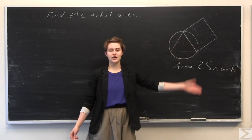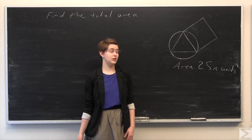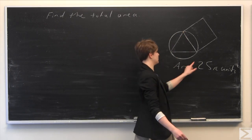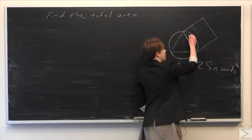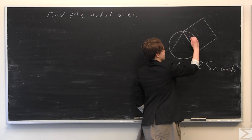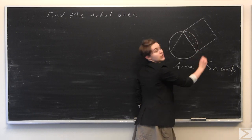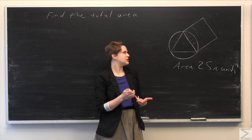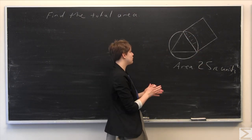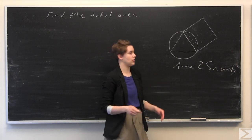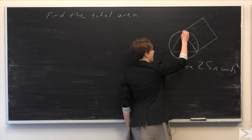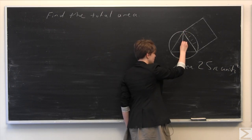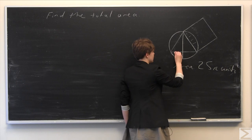We're given only the area of the circle, and we need to find the total area enclosed by the circle plus the square, keeping in mind that that excludes the overlapping part. So first of all, the way we're going to start this problem is we're going to draw a bisector, just like this,